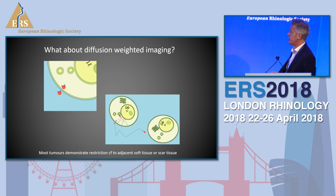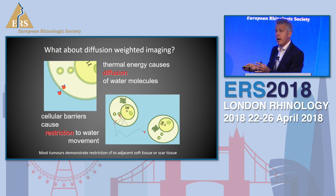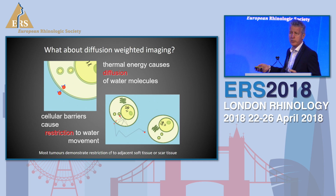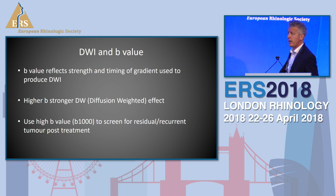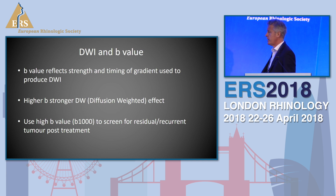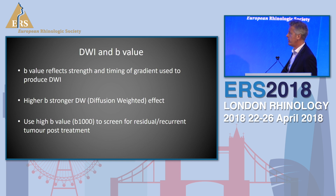Diffusion-weighted imaging: thermal energy causes diffusion of water, and cellular barriers cause restriction. So most tumours demonstrate restriction compared to the adjacent soft tissue or scar tissue. B values reflect the strength and timing of the magnetic gradient used to produce diffusion-weighted imaging. The higher the B value - getting towards 1000 - the stronger the diffusion weighting. We routinely use a high B value to screen for residual or recurrent tumour post-treatment.